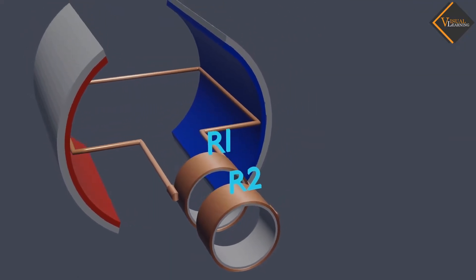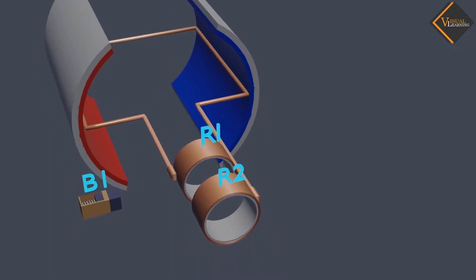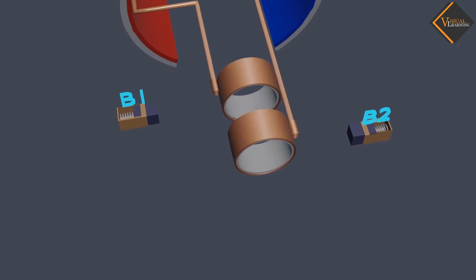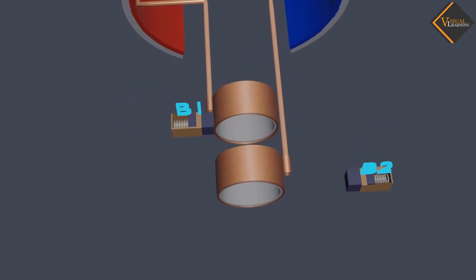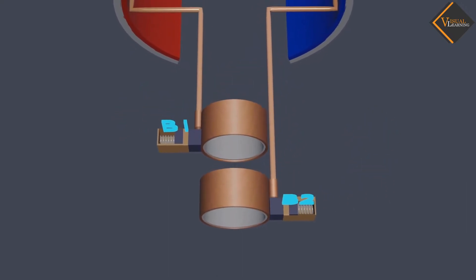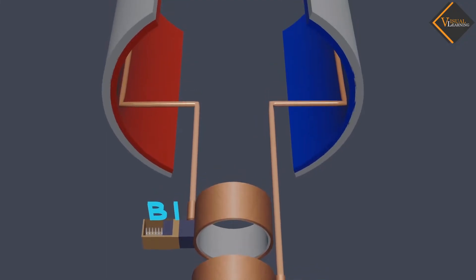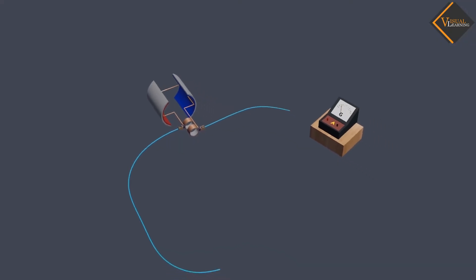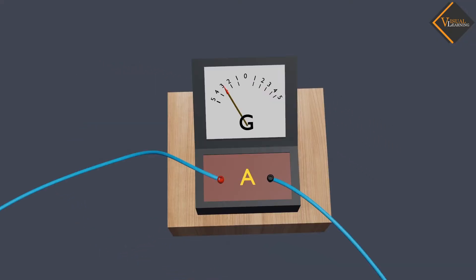The two conducting stationary brushes B1 and B2 are kept pressed separately on the rings R1 and R2 respectively. Outer ends of the two brushes are connected to the galvanometer to show the flow of current in the given external circuit.